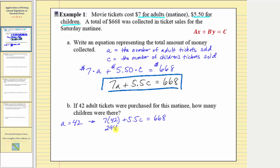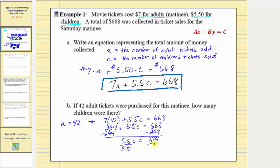So we have two hundred ninety-four plus five point five c equals six hundred sixty-eight. Next we want to isolate the c term, so we'll subtract two hundred ninety-four on both sides. That gives us five point five c equals six hundred sixty-eight minus two hundred ninety-four, which equals three hundred seventy-four. Last step, divide both sides by five point five. We get c equals three hundred seventy-four divided by five point five, which equals sixty-eight. So sixty-eight children attended the matinee.